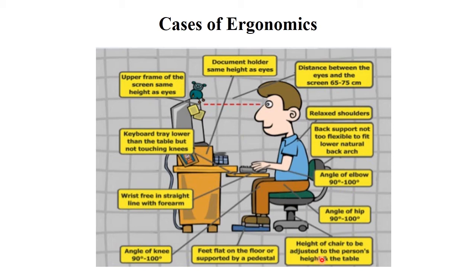The height of the chair should be adjusted to the person's height and the table. Many industries and organizations use adjustable chairs; feet should be flat on the floor supported by the pedestal. The knee angle is always between 90 to 100 degrees. The wrist should be in a straight line with the forearm. The keyboard tray should be lower than the table. The keyboard and mouse should always be placed lower than the monitor, and the upper frame of the screen should be at the same height as the eyes.